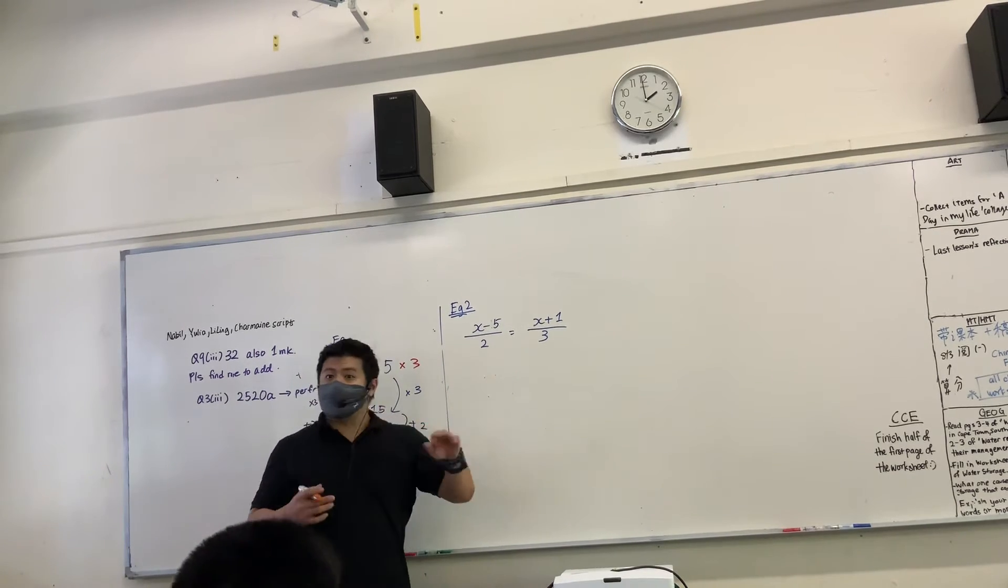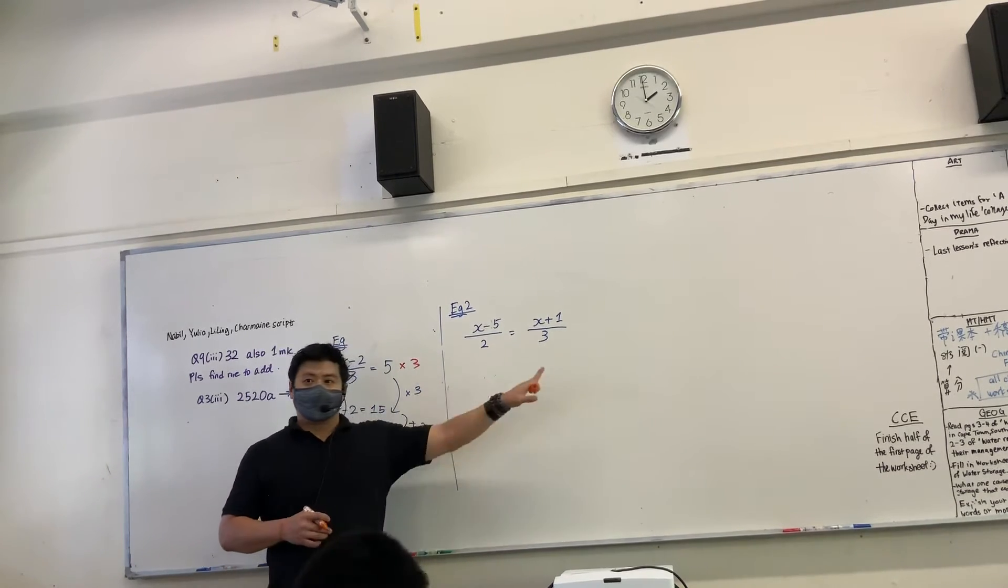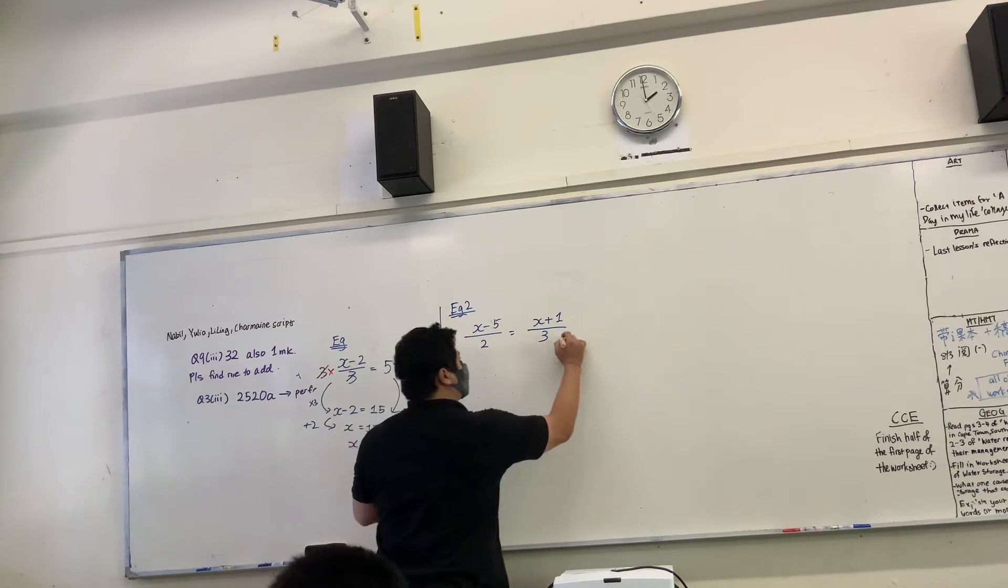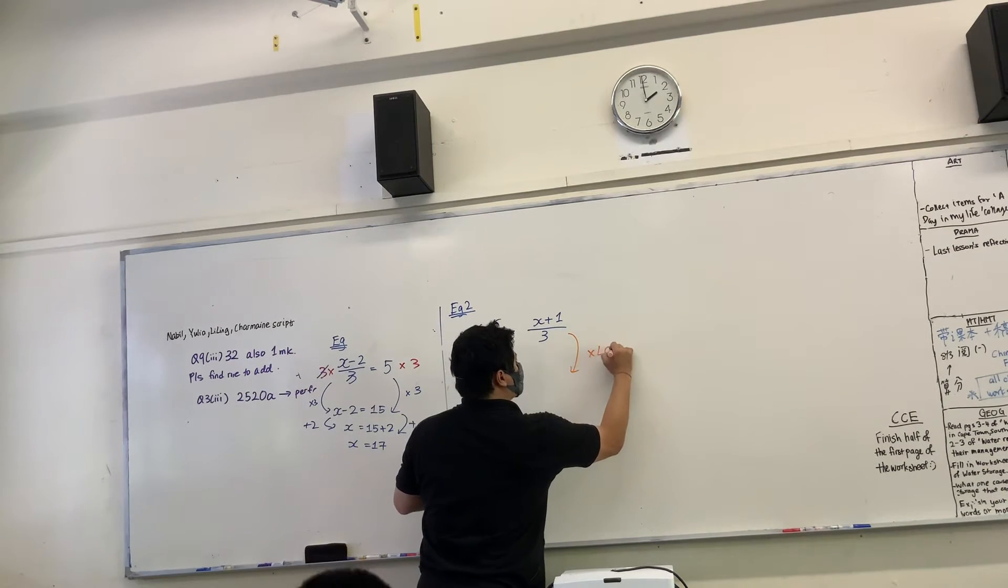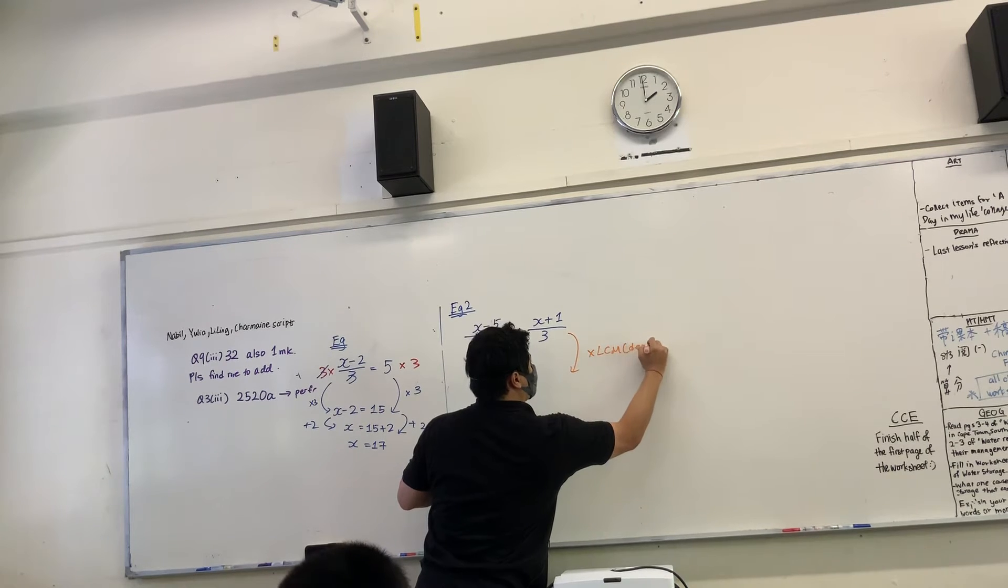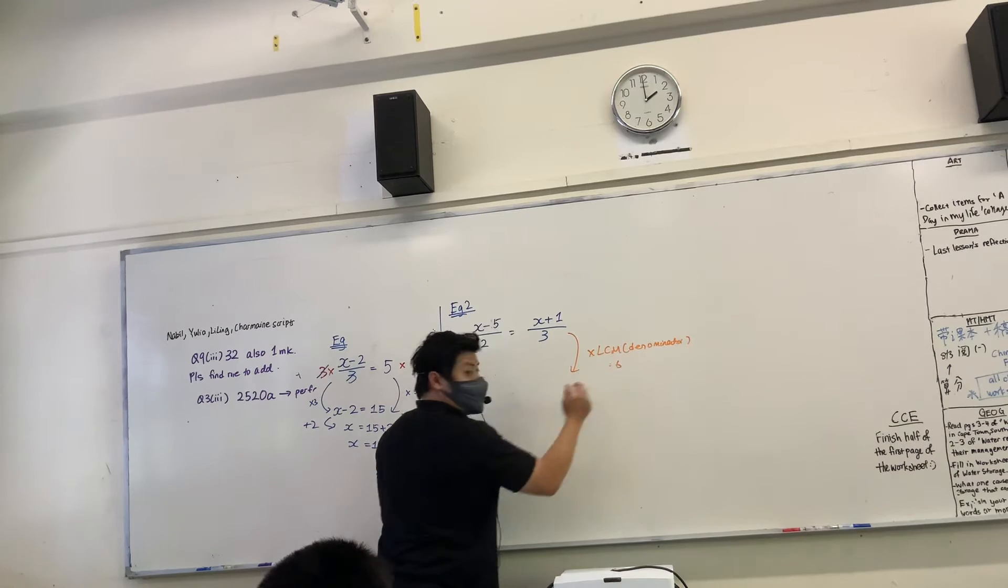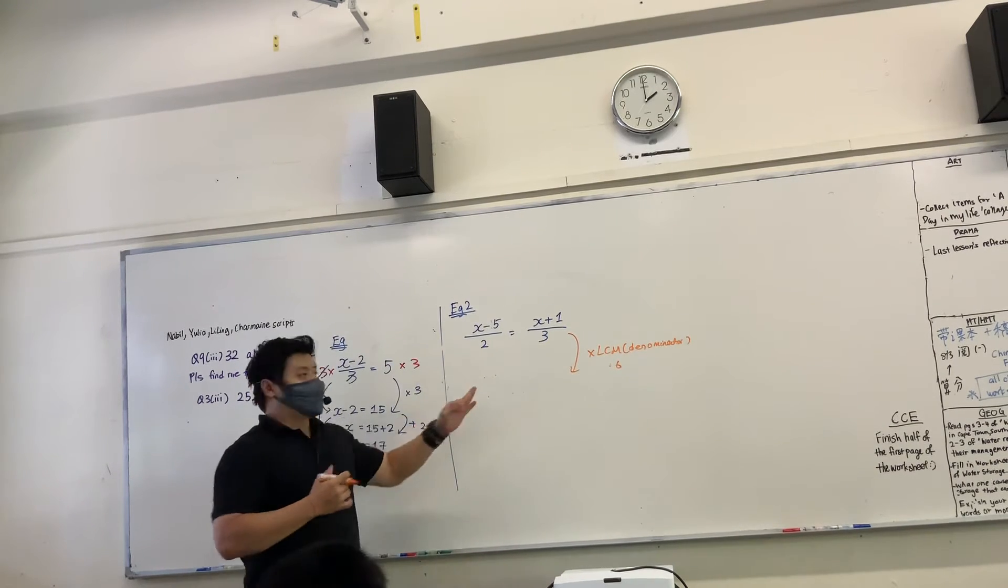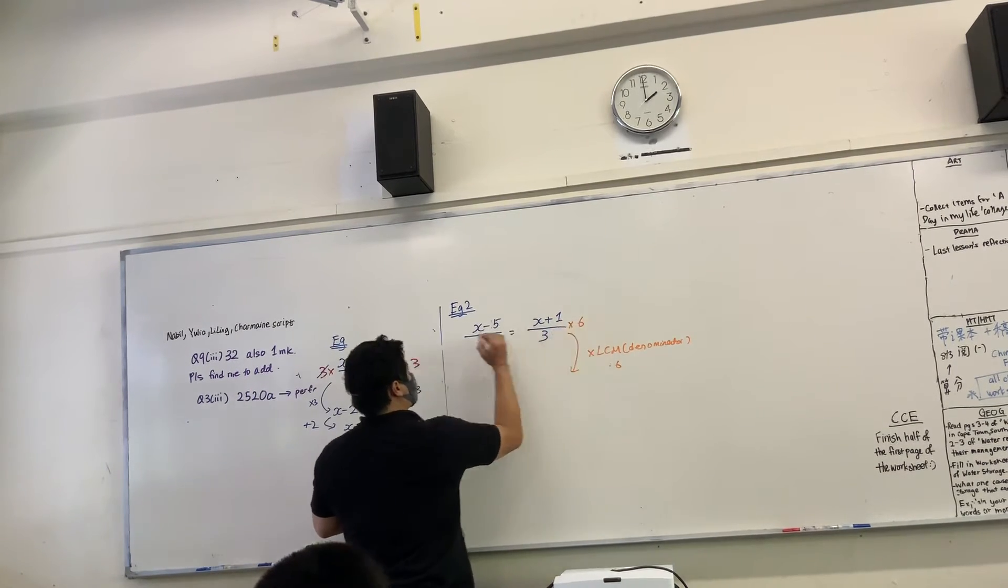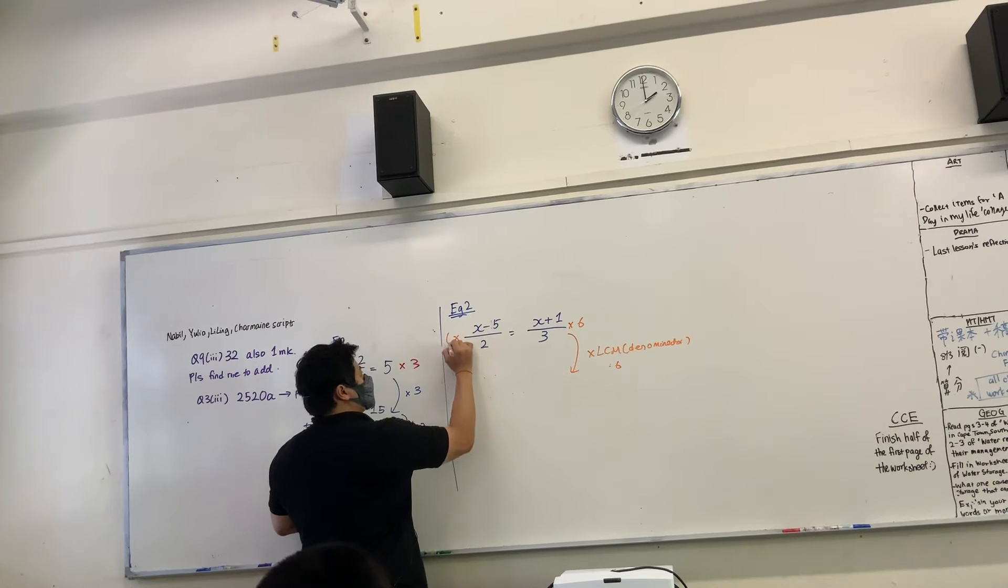6. How is 6 related to these two? LCM. Yes, LCM. So you multiply by basically the LCM of the denominator. Is that okay? In this case it is 6. This is the trick. So you multiply by 6.